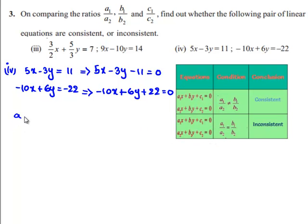we get a1 is equal to 5, b1 is equal to minus 3 and c1 is equal to minus 11. Similarly, a2 is equal to minus 10, b2 is equal to 6 and c2 is equal to 22.